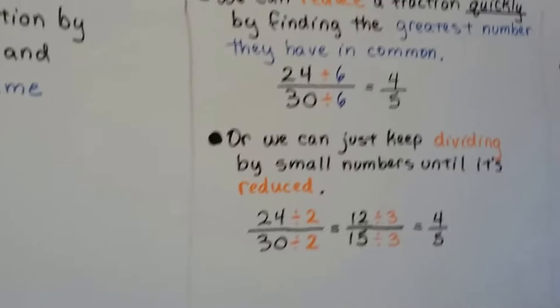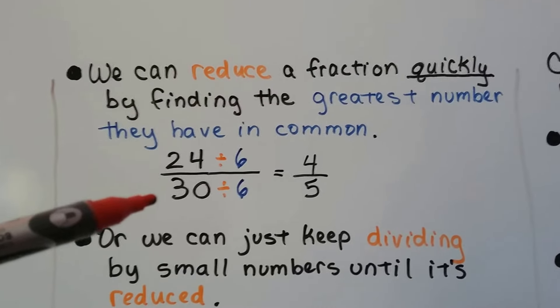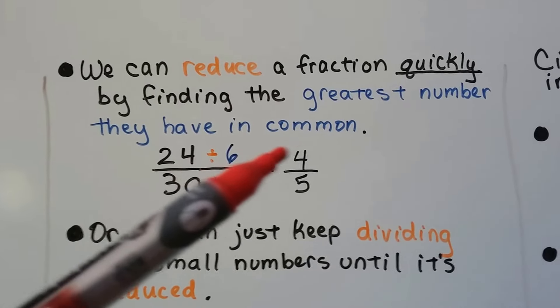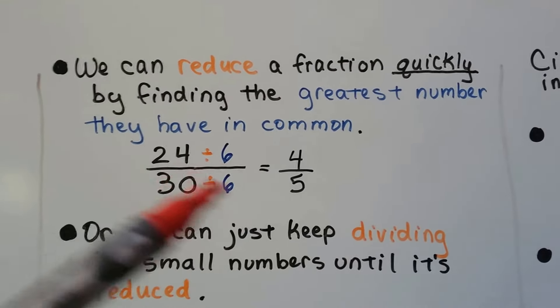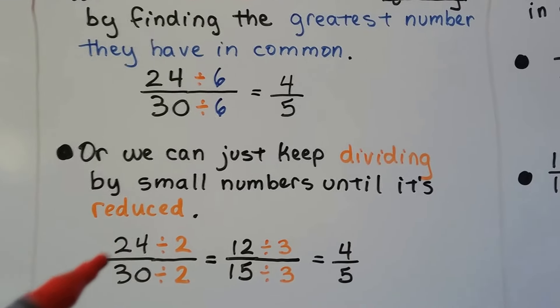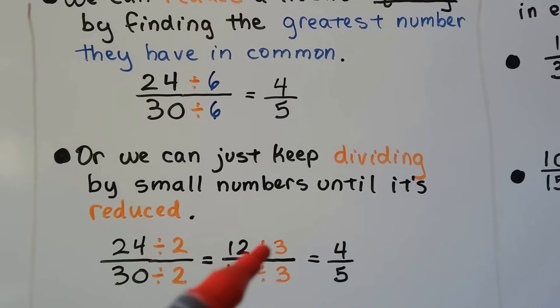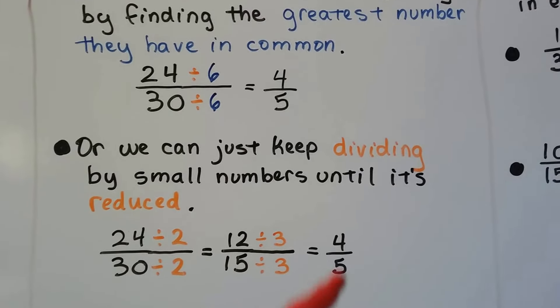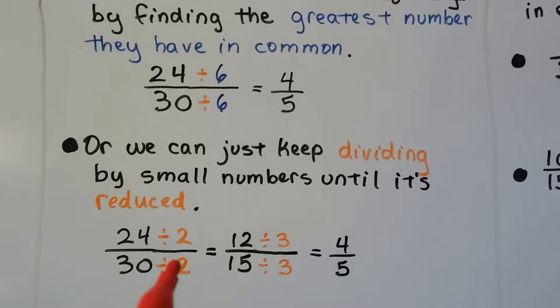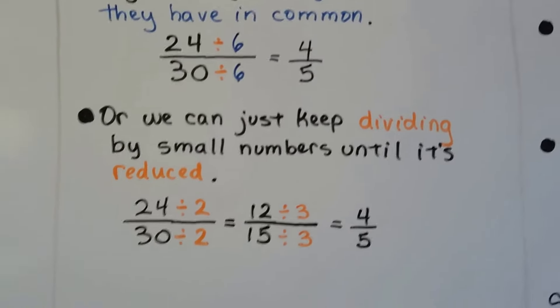We can reduce a fraction quickly by finding that greatest number they have in common. 24 30ths can be divided by 6 for the numerator and denominator, and 24 divided by 6 is 4 and 30 divided by 6 is 5. We'll get 4 fifths. Or we can just keep dividing by small numbers until it's reduced. So we can divide it by 2 and get 12 15ths. Then we can divide it by 3. 12 divided by 3 is 4. 15 divided by 3 is 5. And then we get our 4 fifths. This way is quicker. And actually, you want to know something cool? If you multiplied this 2 times this 3, you'd get that 6. Look at that. It works every time, too.